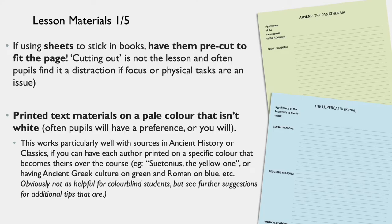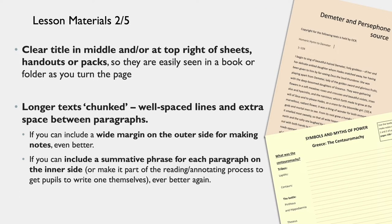Lesson materials. If using sheets that are to be stuck in books, have them pre-cut to fit the page rather than having students cut them out themselves. Printed text materials on a pale colour that isn't white is very useful. This works particularly well with sources in ancient history or classics — for example, with my GCSE Classical Civilisation course, I have Athens or Greece on green and Rome on blue. Putting the title right in the middle and or at the top right of sheets makes it much easier to be seen when you flick through a book, which is helpful for people with dyspraxia. Longer texts need to be chunked, with well-spaced lines and extra space between paragraphs, and if you can include a wide margin on the outer side, or a summative phrase on the inside for them to annotate next to, even better.